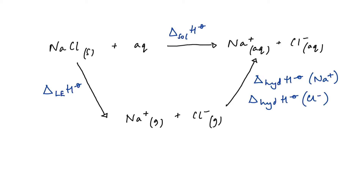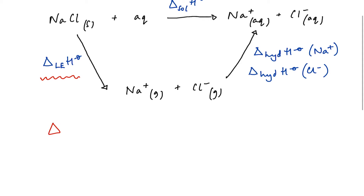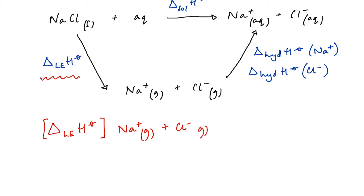Before we go further, we need to clarify the term lattice enthalpy. At A-level, pretty much every specification states that the lattice energy or lattice enthalpy for an ionic compound refers to the lattice energy of formation of an ionic solid — the reaction in which a cation and anion react together to form the ionic compound. That is a highly exothermic process; it's going to be negative.